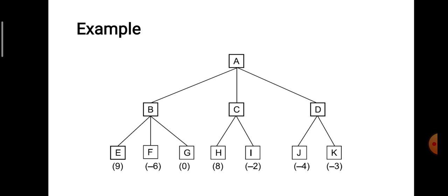So in this case, from the subtree headed by node B, we have three possible moves E, F and G. And the maximum value among these moves is of node E, which is 9.